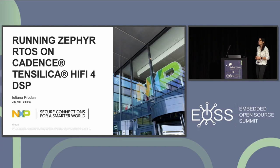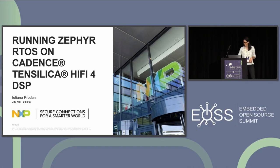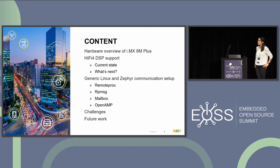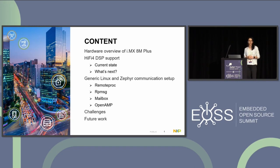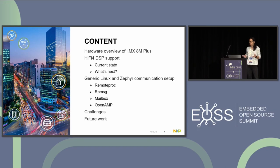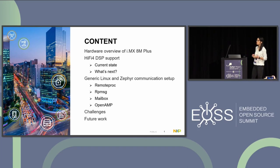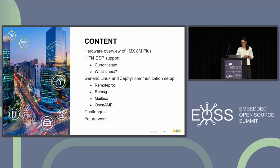Today I'm going to talk about how we can run Zephyr on the HiFi 4 DSP from Tensilica. We're going to start by looking at the hardware overview of the i.MX A10+. Next, we'll discuss the current support for the HiFi 4 DSP in Zephyr and what's next — what samples we've enabled and what we want to achieve. We'll also discuss the Linux and Zephyr communication setup, touching on Remote Proc, RPMSG, Mailbox, and OpenAMP. I'll also discuss the challenges I faced while adding support for the HiFi 4 DSP and our future plans.